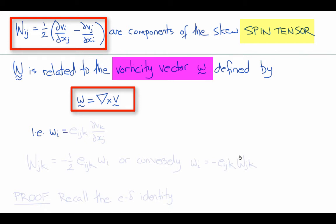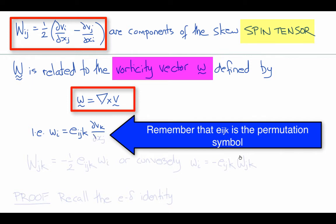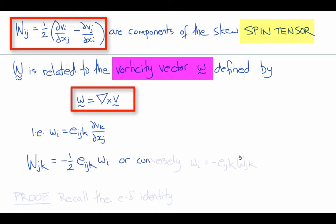Or in index notation, wi equals eijk del vk del xj. And so we can show that the spin tensor, capital wjk, its components are related to the vorticity vector by minus one-half eijk little wi. And the inverse of that relation is little wi equals minus eijk capital wjk.